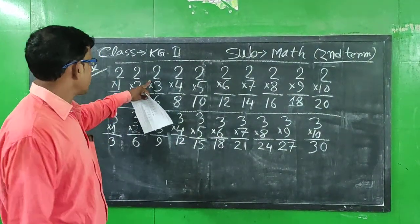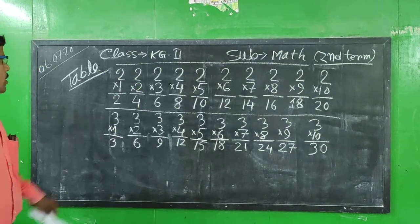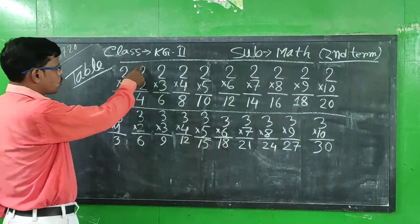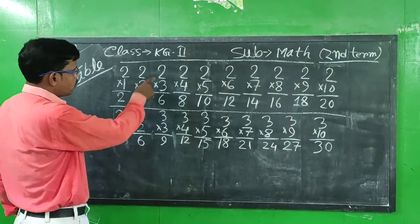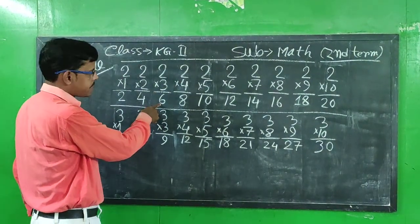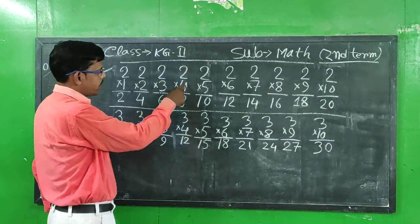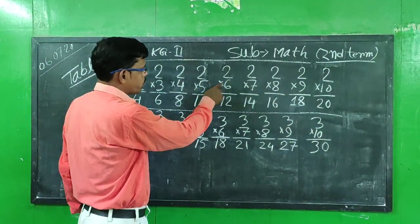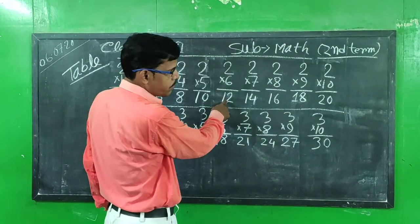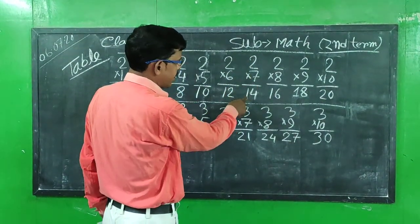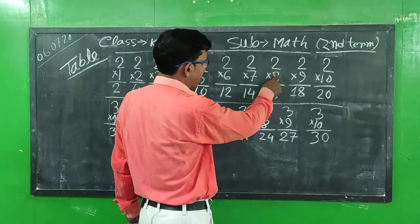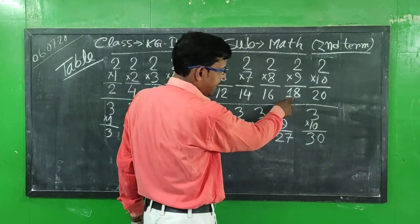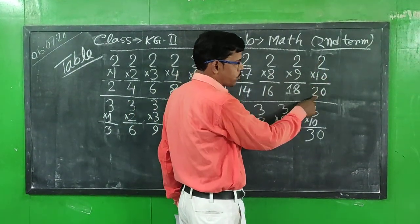First, table number 2. 2 into 1 is equal to 2. 2 into 2 is equal to 4. 2 into 3 is equal to 6. 2 into 4 is equal to 8. 2 into 5 is equal to 10. 2 into 6 is equal to 12. 2 into 7 is equal to 14. 2 into 8 is equal to 16. 2 into 9 is equal to 18. 2 into 10 is equal to 20.